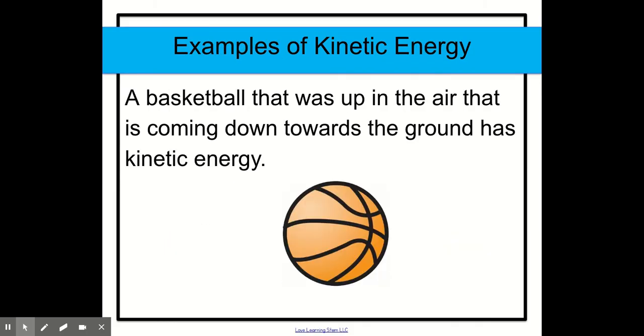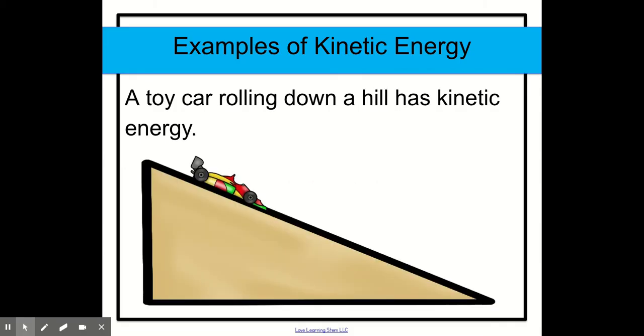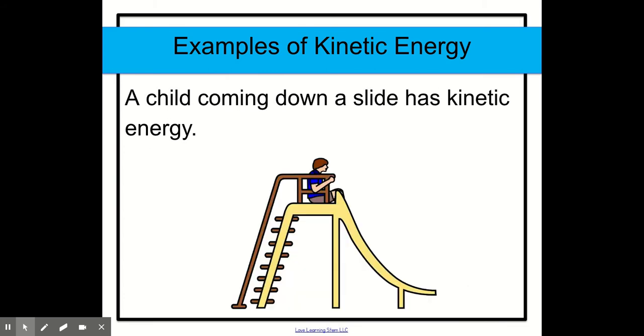And some examples of kinetic energy is this basketball that was up in the air that is coming down now towards the ground. And this has kinetic energy when the ball is coming down. Another example of kinetic energy is when a toy car is going down or rolling down a hill. And this toy car has kinetic energy. It's moving down. Here is another example. You see the child is sitting at the top. But if it had kinetic energy, then the child is actually sliding down the slide. That's when you know the child has kinetic energy.